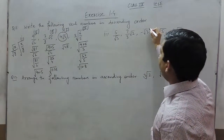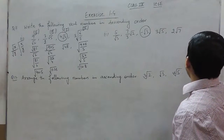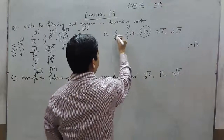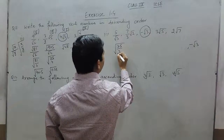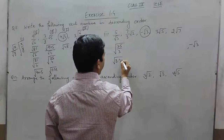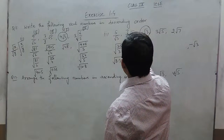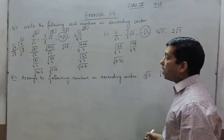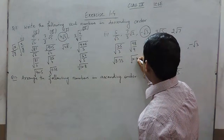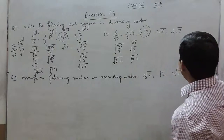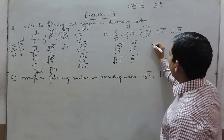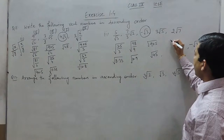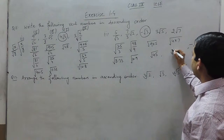For the next set of numbers, any negative number is always the smallest when compared with positive numbers. The remaining numbers are converted: 5/√3 becomes √(25/3) ≈ √8.33; 7√2/3 becomes √(49×2/9) = √(98/9) ≈ √10.9; −√3 stays as is; 3√5 = √(9×5) = √45; and 2√7 = √(4×7) = √28.